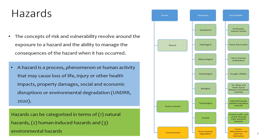Within natural hazards, we can split further in terms of geophysical, hydrological, climatological, and biological subtypes — each with different examples. For instance, within natural hazards, the meteorological subgrouping includes storms and extreme temperatures. Climatological covers droughts and wildfire.